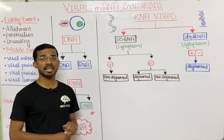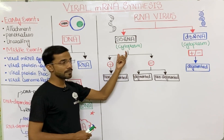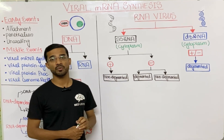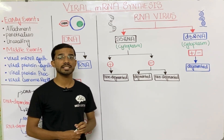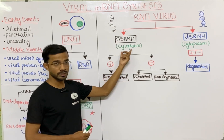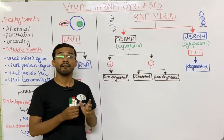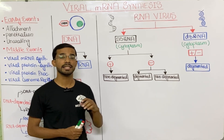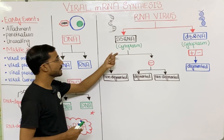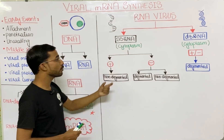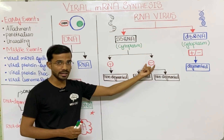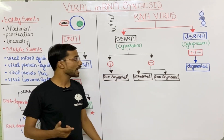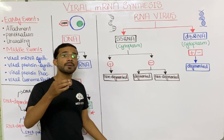RNA viruses have two categories: single stranded RNA and double stranded RNA. In RNA viruses, in majority cases the viral messenger RNA synthesis happens in the cytoplasm. But there are some exceptions — the retrovirus and the influenza virus synthesize messenger RNA in the nucleus. In single stranded RNA, we categorize into positive polarity and negative polarity. Positive polarity means they are similar to the messenger RNA, and negative polarity means they are complementary to the messenger RNA.